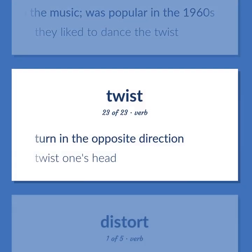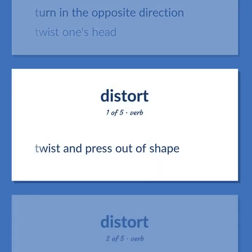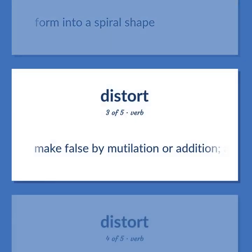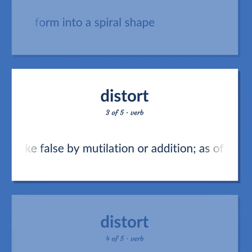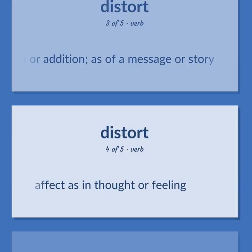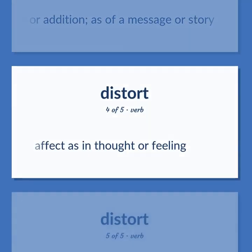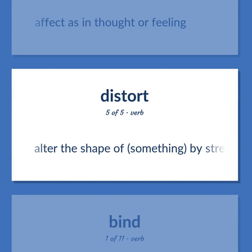Twist: to turn in the opposite direction. Example: twist one's head. To twist and press out of shape. To form into a spiral shape. To make false by mutilation or addition, as of a message or story. To effect as in thought or feeling. To alter the shape of something by stress.